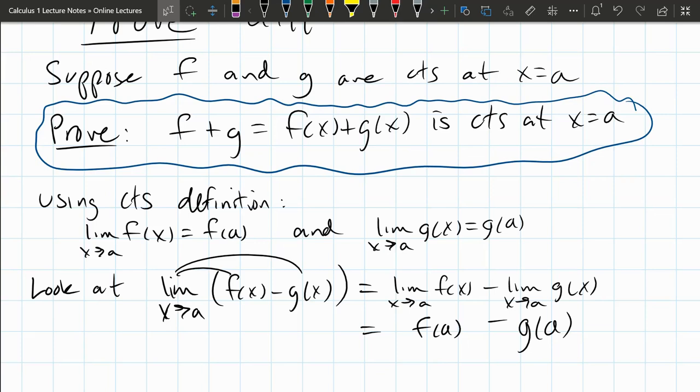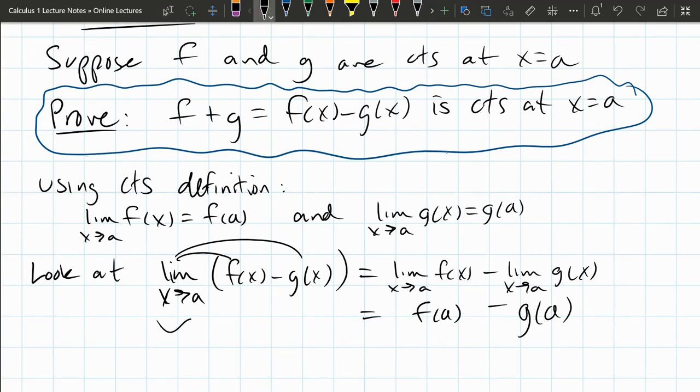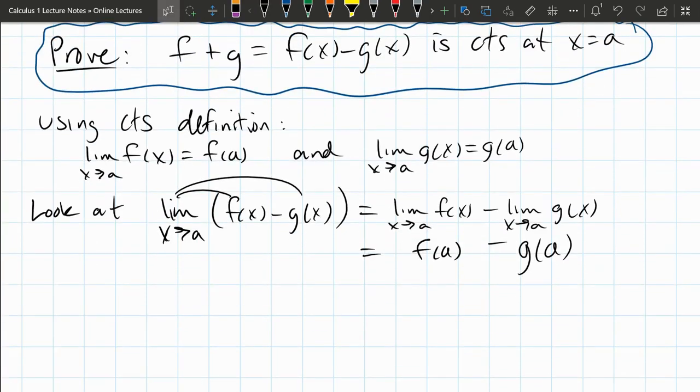We have now shown f minus g. f minus g is continuous at x equals a because we took the limit of f minus g and got to f of a minus g of a. That means we've showed the limit equals the value.